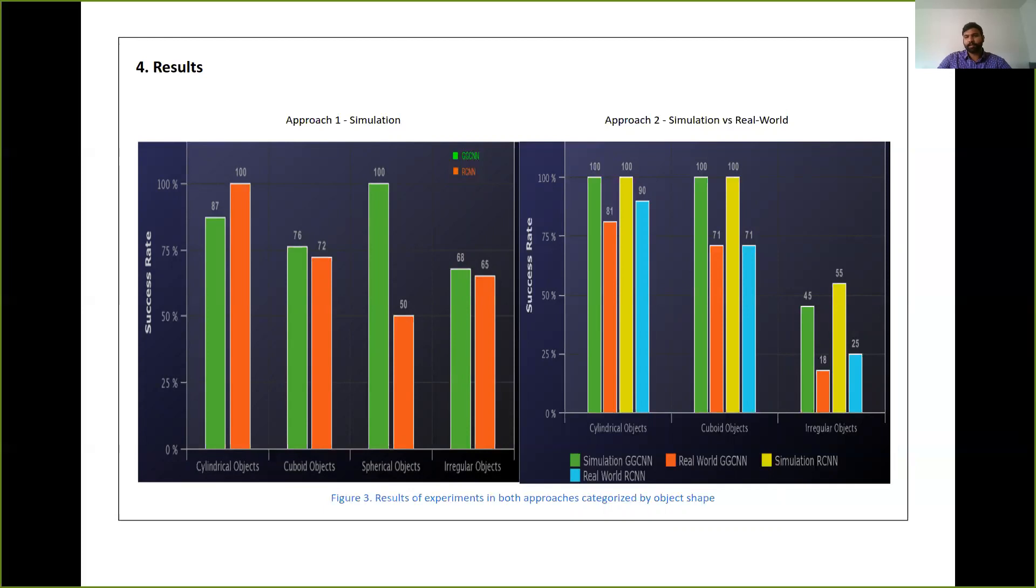Then on the right side, we have the second approach, which we performed both in simulation and the real world. And in this approach, our results proved that the RCNN multi-grasp network finally provides better results than the generative grasping CNN.